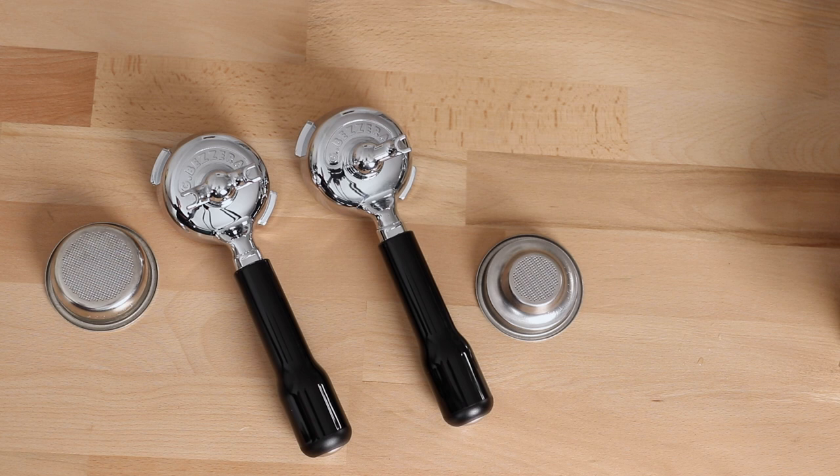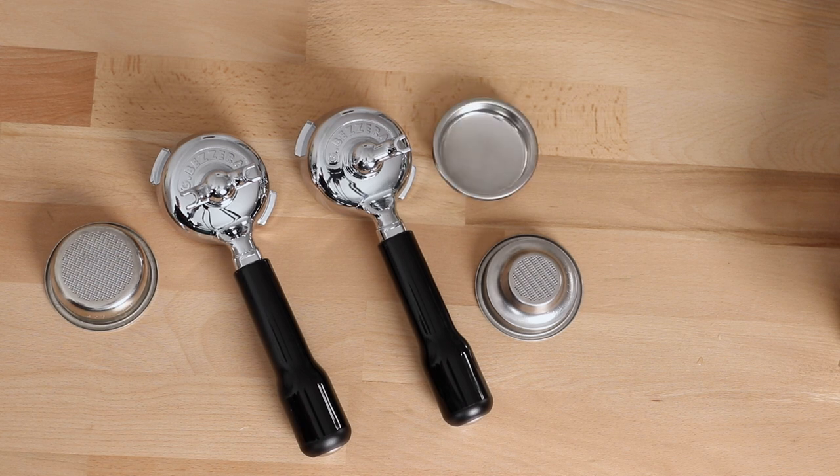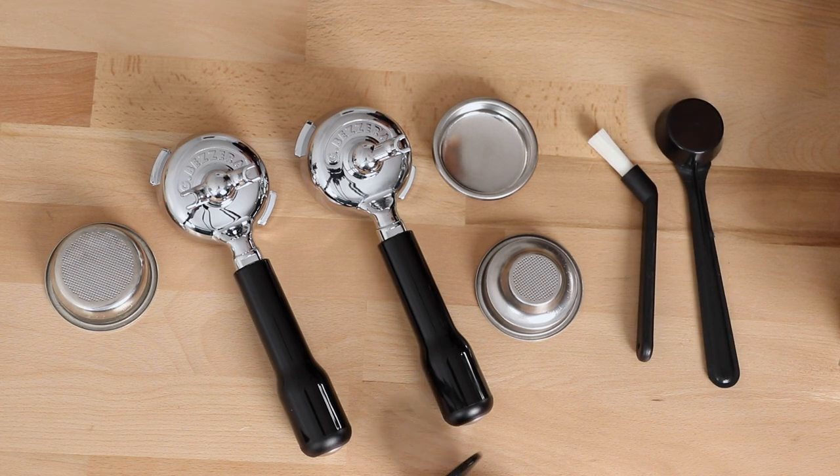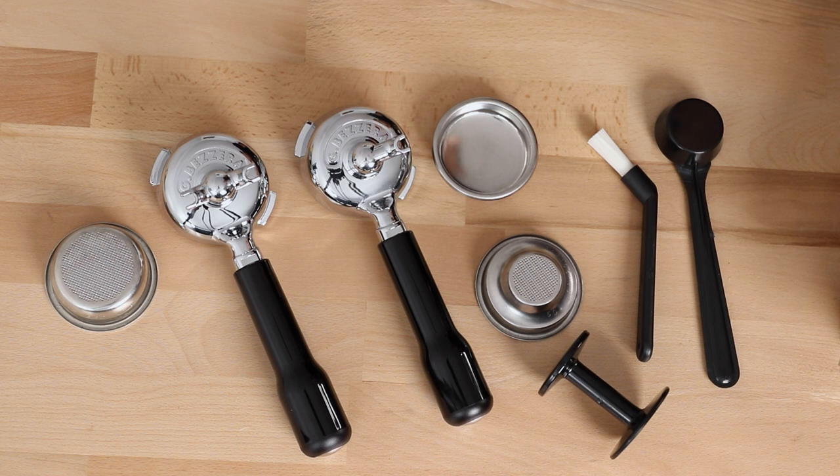The other highlight to the accessories is an actual metal blind filter basket to assist in back flushing the machine, though you will want to get a separate tamp to replace the plastic one you get in the box.